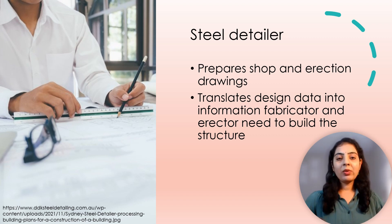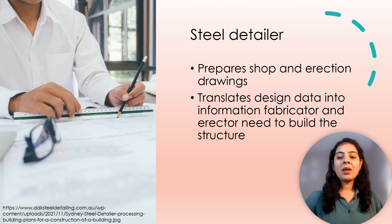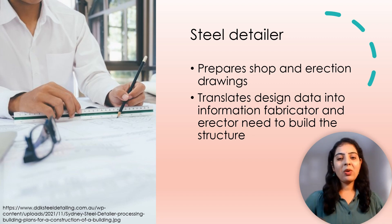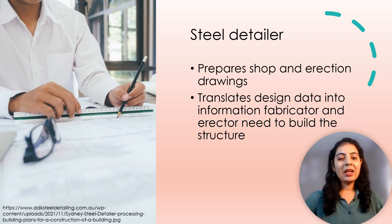The person who prepares shop and erection drawings for the fabrication and erection of the structure is known as the steel detailer. The steel detailer translates design data provided by the owner's design representative — normally the structural engineer of record, who approves the shop and erection drawings — into information that the fabricator and erector need to build the structure.